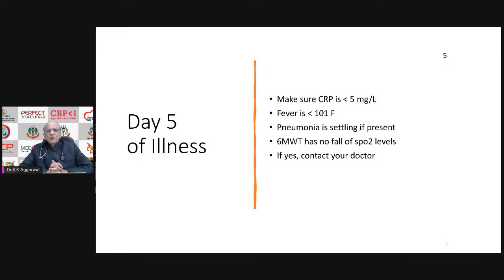D-dimer will rise first, and then platelet count may fall by at least 30%. Therefore, if by day five your pneumonia is getting complicated, this clot-related and inflammation-related pneumonia starts by day three. If by day five you have not added oral anti-coagulation along with anti-inflammatory treatment for pneumonia, you could be in trouble.